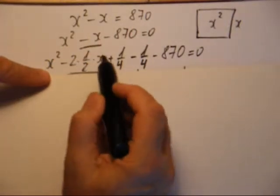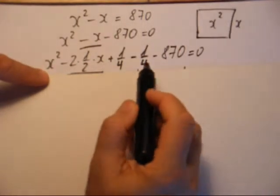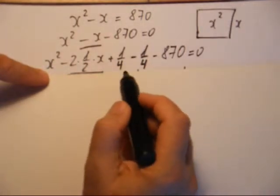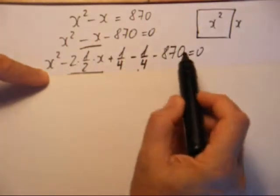2 fois 1 demi ça fait 1. Puis je vais rajouter un carré et je vais soustraire un carré. Pourquoi je me complique? Vous allez voir tout de suite. Et bien sûr je soustrais 870.